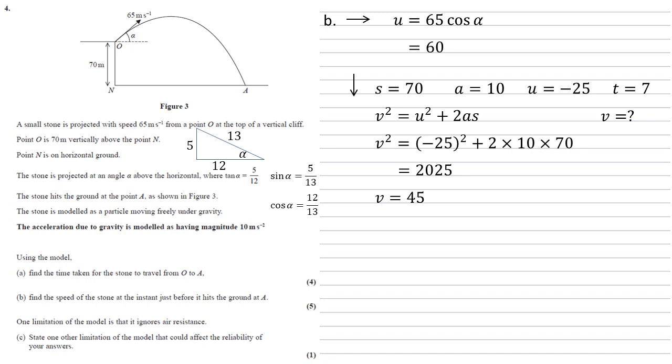So we've got our horizontal and vertical components now. To work out the speed, we just need to find the, basically the hypotenuse of the triangle with the edges 45 and 60. So our speed is going to be the square root of 60 squared plus the 45 squared, which equals 75 meters per second.